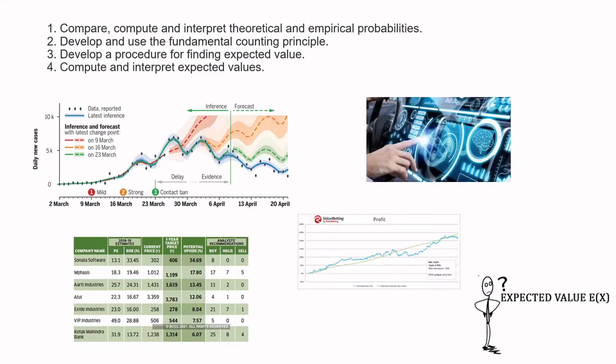And then we're going to compute and interpret some expected values. So we'll compute some, and we'll do some interpretations. And here's just some illustrated interpretations. So we have some medical interpretations on the upper left, AI interpretations on the upper right, stock market thing going on in the lower left, and some betting and profit on the lower right there.